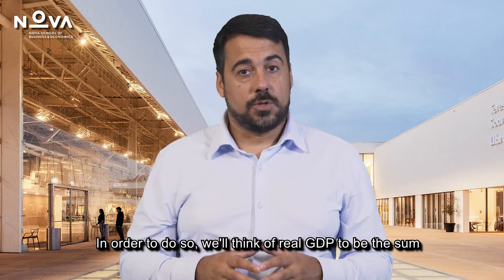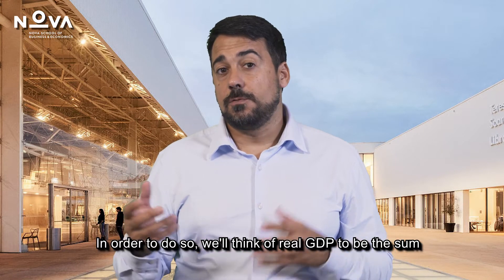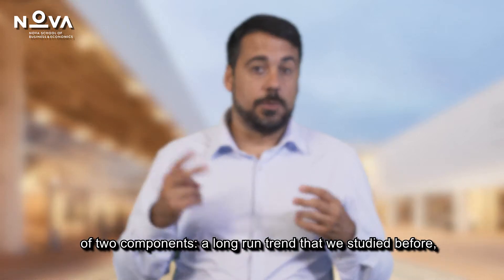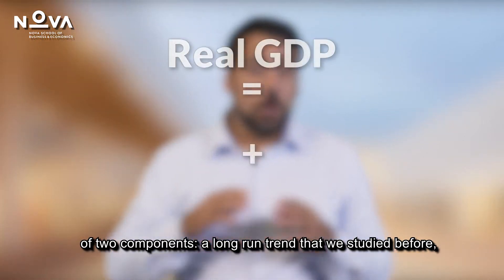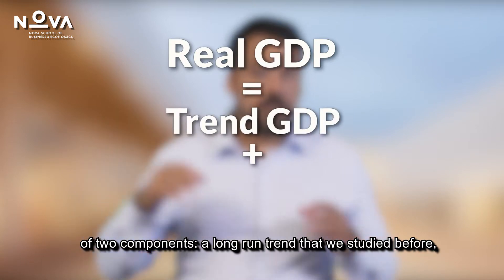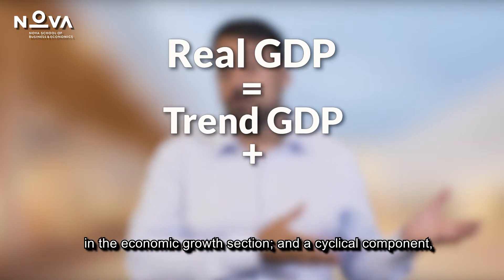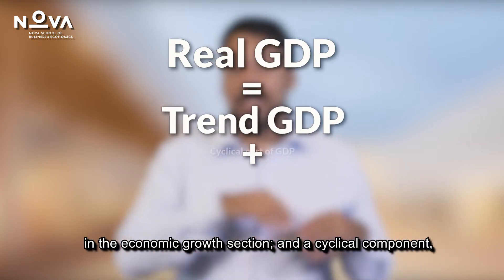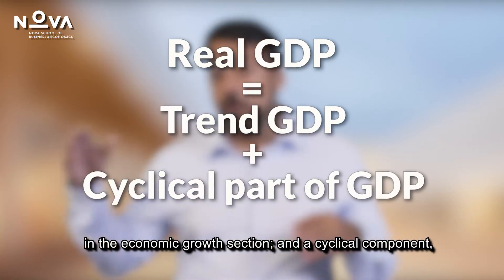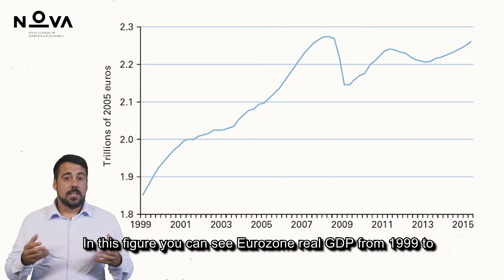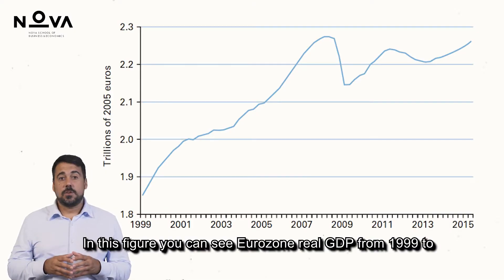In order to do so, we will think of real GDP as the sum of two components: a long-run trend, as stated before in the economic growth section, and a cyclical component that revolves around this trend.